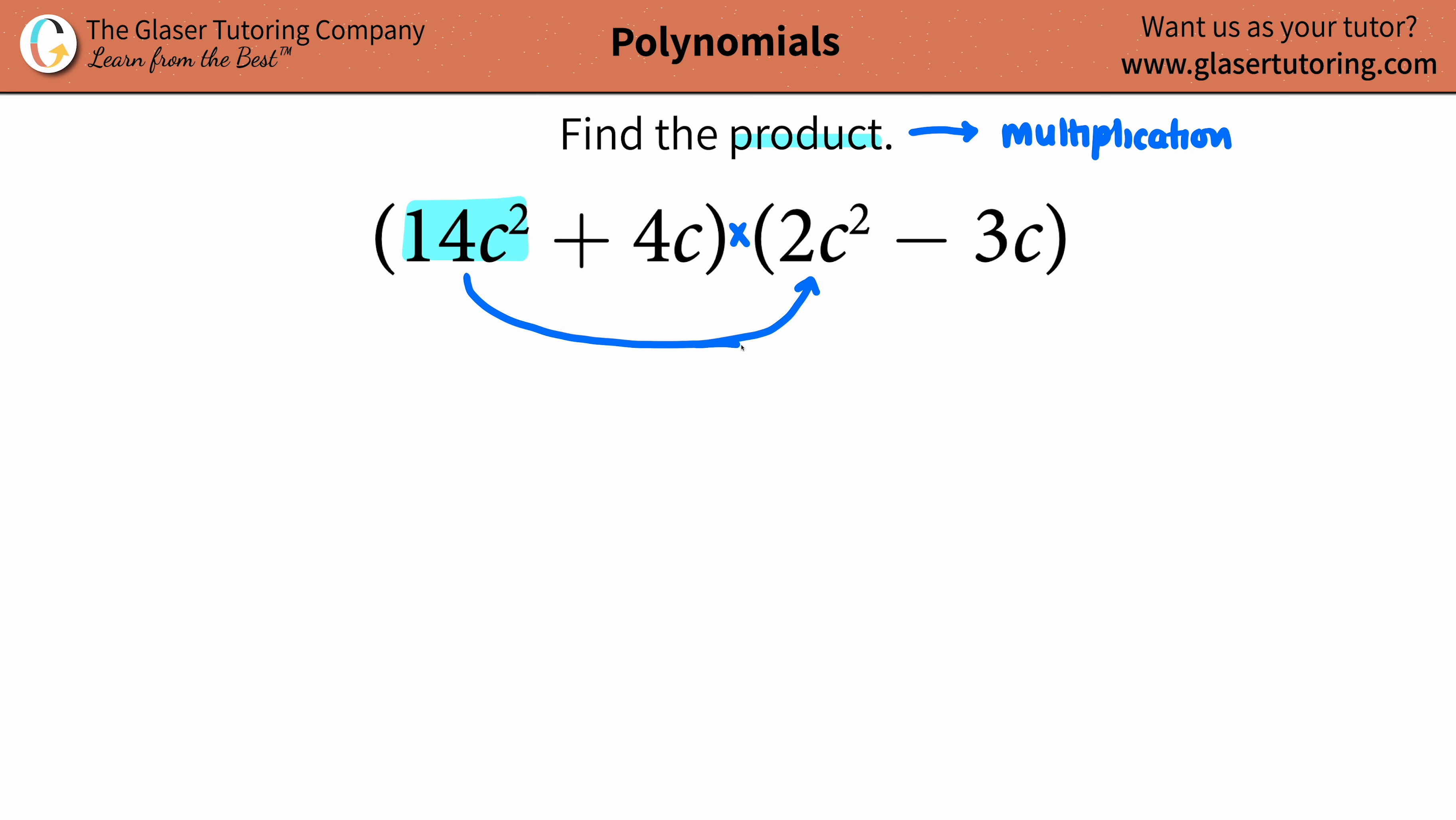That's why you've got to be fair. If you're going to take your 14c² and multiply it by 2c², you must also take that term and multiply it with the other part of that parentheses. That's where the fairness comes from. There's only two terms here. Everybody is being multiplied by 14c², so we're good to go.